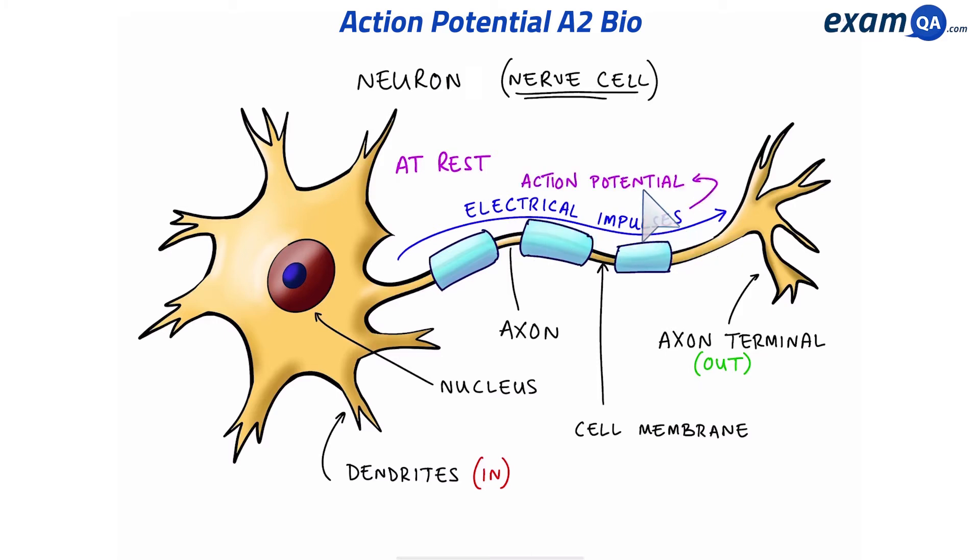In this video, we're going to look at what happens both at rest and during an action potential to the neuron. Here's a clue. It's all to do with different charges moving about. So let's zoom into this area and see what happens in more detail.